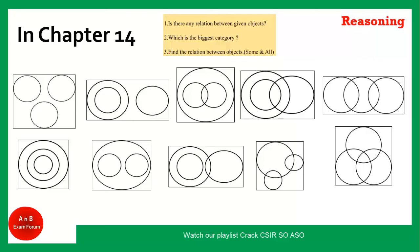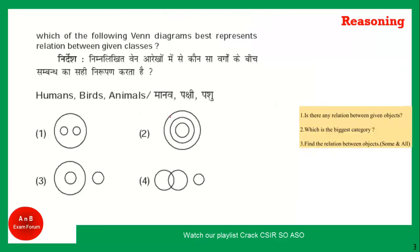Students, are you ready for this chapter? The first question is: which of the following Venn diagrams best represents the relationship between given classes? You have three classes and you have to tell which is the correct Venn diagram for this class. We will follow the strategy that we have studied in the previous chapter.